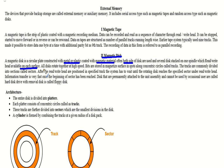All the disks rotate together at high speed. Data is stored along a concentric circle called a track. The tracks are commonly divided into sections called sectors. The read-write head is positioned at a specific track, and the system has to wait until the rotating disk reaches the specific sector under the read-write head.